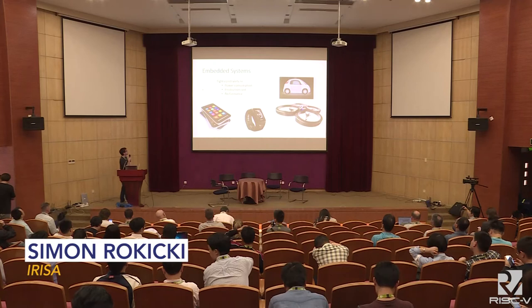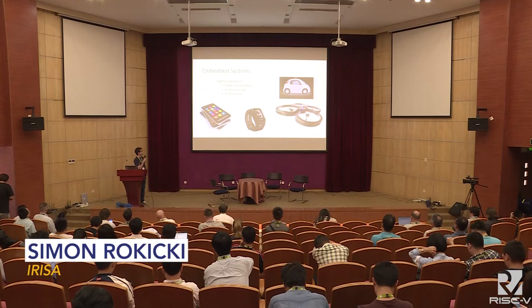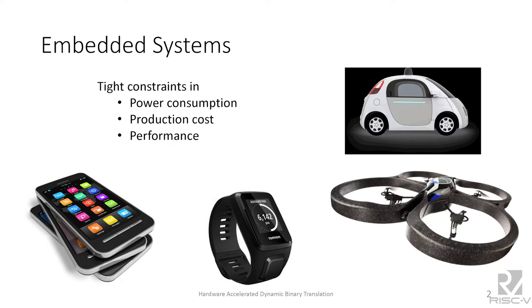Embedded systems are everywhere in our life — from smartphones and smartwatches all the way to self-driving cars and drones. These systems are characterized by very tight constraints in terms of power consumption, production cost, and performance. Today I will mainly focus on the aspects of power consumption and performance, and the trade-off between the two.